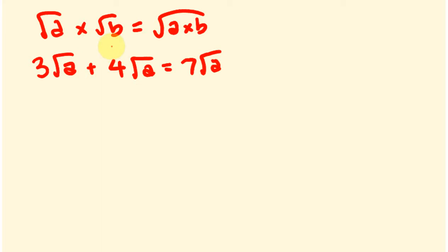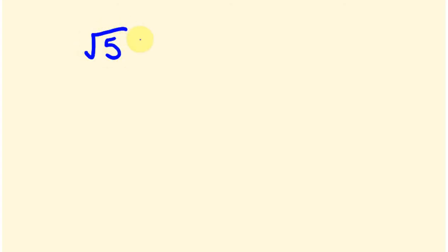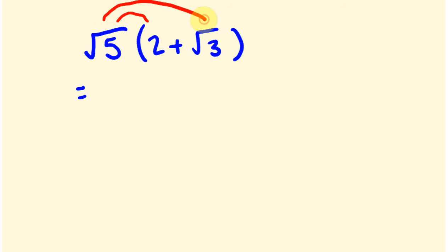We also found that we could simplify certain surds if the number under the square root sign had a factor which was a perfect square — for example, 2 squared equals 4 or 3 squared equals 9. If you haven't seen those previous videos, they're worth going back to. Now let's have a look at the type of questions we're covering here. Say you've got something like the square root of 5, and we're going to multiply this by something in brackets: 2 plus the square root of 3.